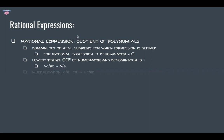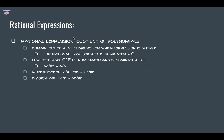To multiply rational expressions, multiply the numerators and multiply the denominators. For example, 2/3 times 5/6 equals 10/18, and reducing to lowest terms gives 5/9. To divide rational expressions, take the reciprocal of the second expression and then multiply. So 2/3 divided by 5/6 becomes 2/3 times 6/5, which equals 12/15, or 4/5 in lowest terms.